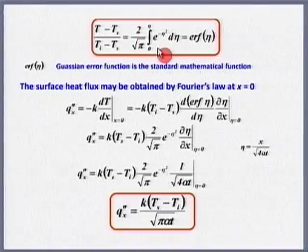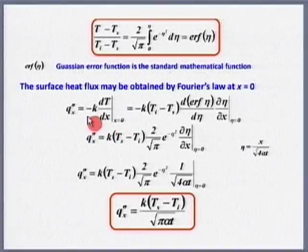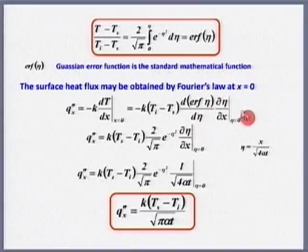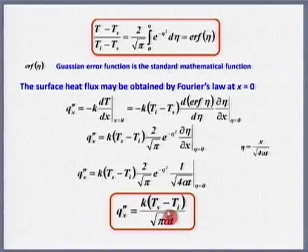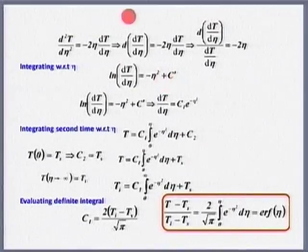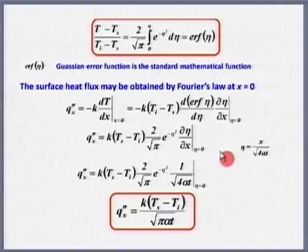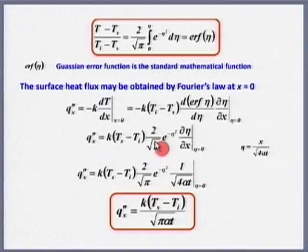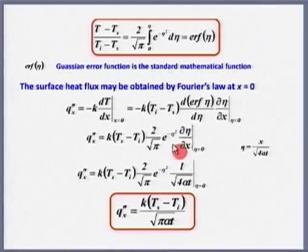Now taking this temperature distribution and our mother equation — Fourier's law of conduction — heat flux q'' = −k · dT/dx at x=0 = k(T_s − T_i)/√(παt). I have consciously skipped the integration and differentiation steps here. I would strongly urge you to do this mathematics yourself, as it would be too lengthy and we would unnecessarily lose time in algebra rather than heat transfer.